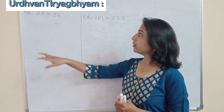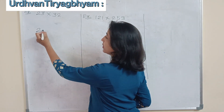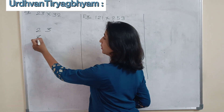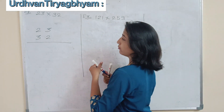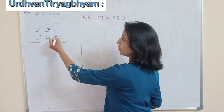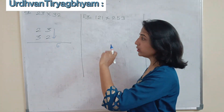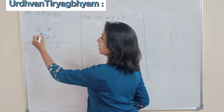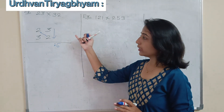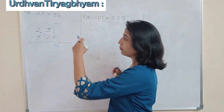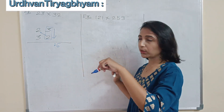Let's see the first example: find the product of 23 and 32. Our numbers are 23 and 32. Vertical means you first take the product of the unit place digits straight down: 3 into 2 gives 6. Then the next step is cross — you take the product of 2 into 2.